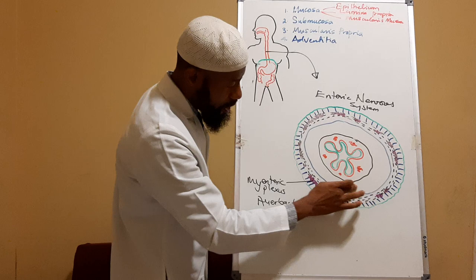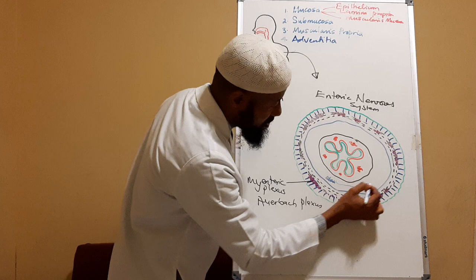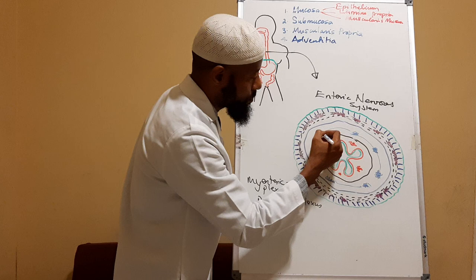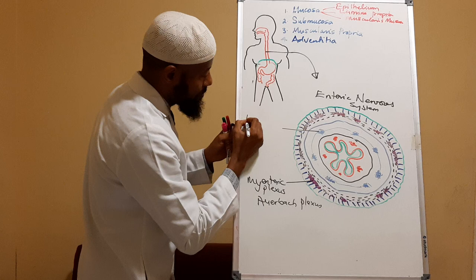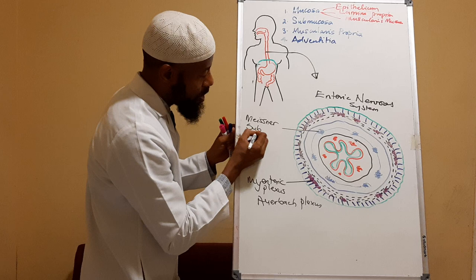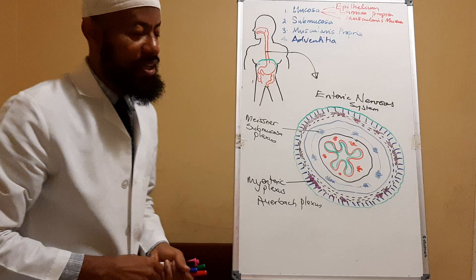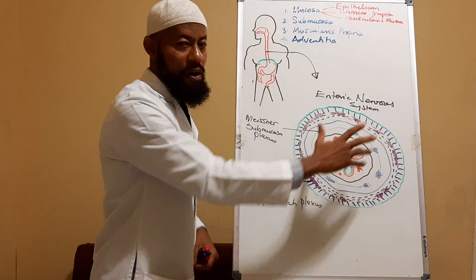In the submucosal layer you also have special nerve plexuses. These are called the submucosal plexus, or Meissner's nerve plexus. Within this submucosal layer you can also find blood vessels, lymphatic vessels, and other structures that are important to give this a complete functioning system.